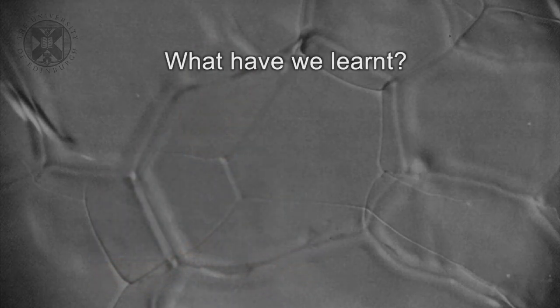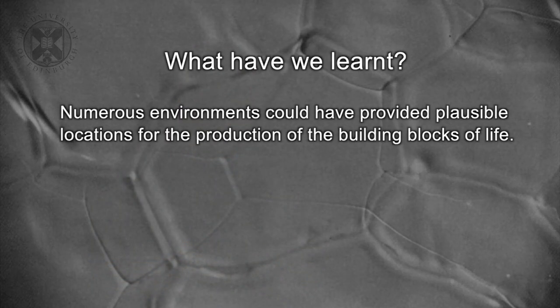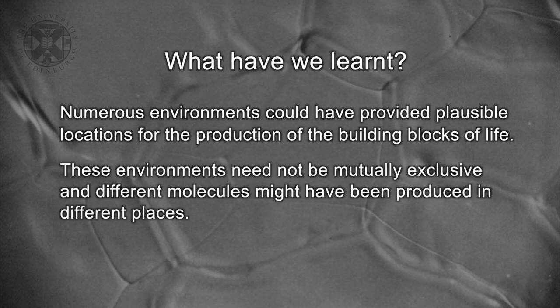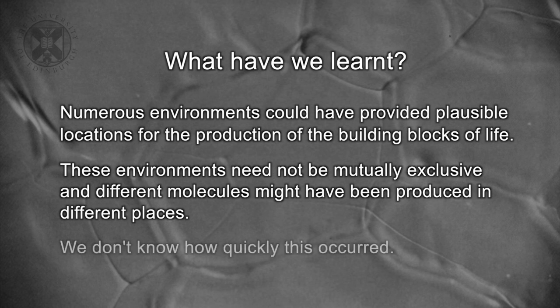So what have we learned in this lecture? Hopefully we've learned that numerous environments could have provided plausible locations for the production of the building blocks of life, and we've looked at some examples of those possible environments. We've learned that these environments need not be mutually exclusive, and different molecules might have been produced in different places — indeed the whole of the early Earth might have been a giant prebiotic reactor. And finally, we don't know how quickly this happened — did the origin of life occur within days or weeks, or did it take hundreds of millions of years? This remains one of the unsolved questions that astrobiologists still have to address.